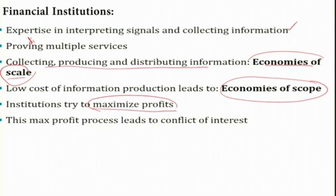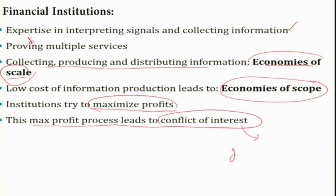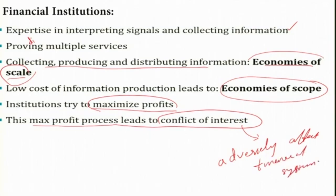During the maximization of profit, this process actually leads to conflict of interest, which adversely affects the financial system. Before proceeding further, let us see what the concepts called economies of scale and economies of scope mean.